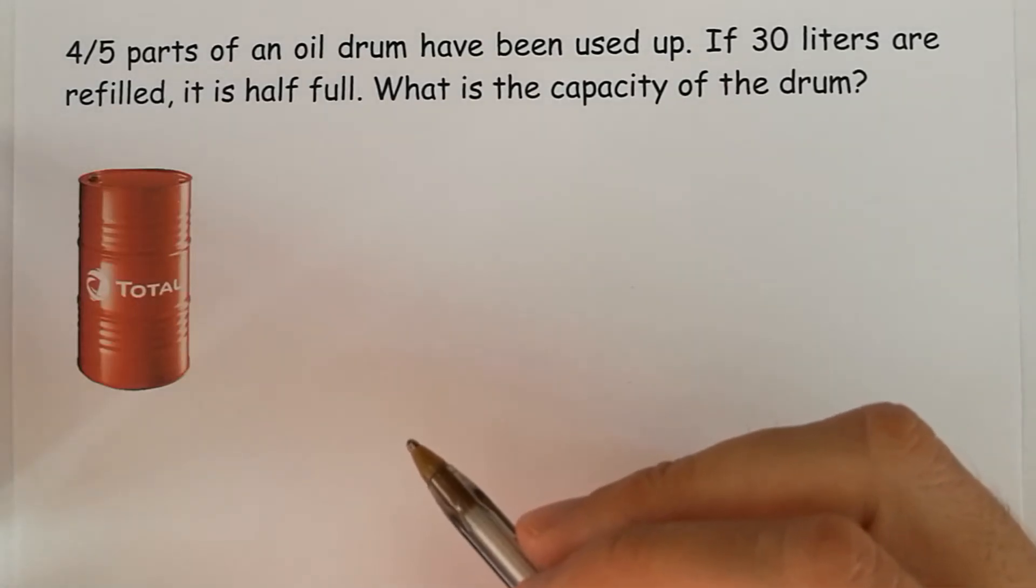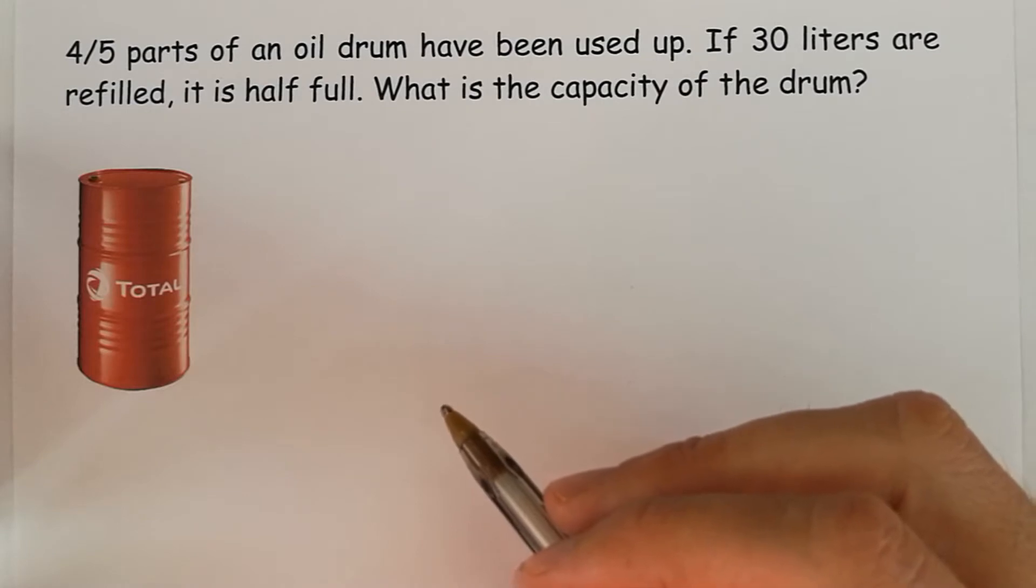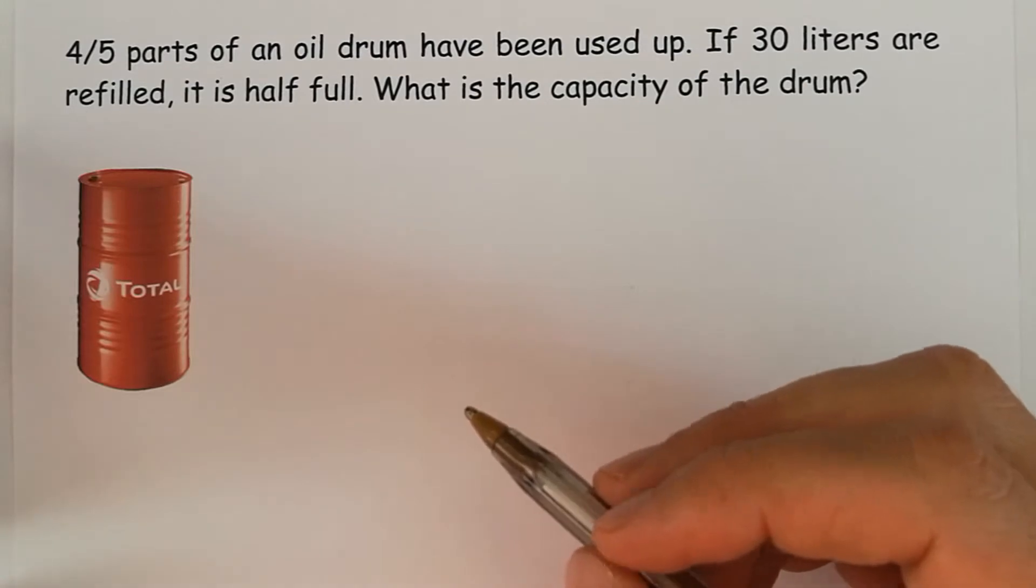Four-fifths of an oil drum have been used up. If 30 liters are refilled, it is half full. What is the capacity of the drum?